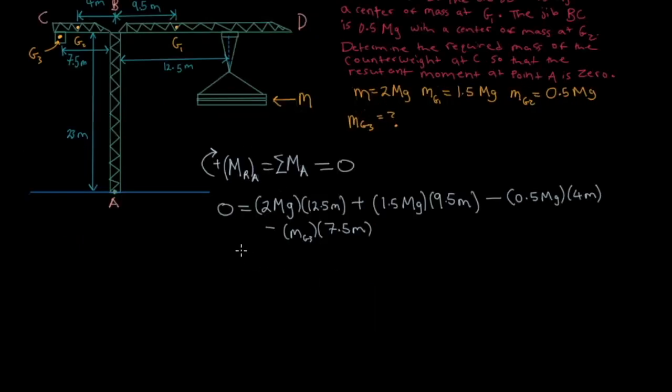And what we can do here is we can simplify this expression. We can simplify all this. So when we add these up we would get 37.25 megagram meters minus mg3 times 7.5 meters.